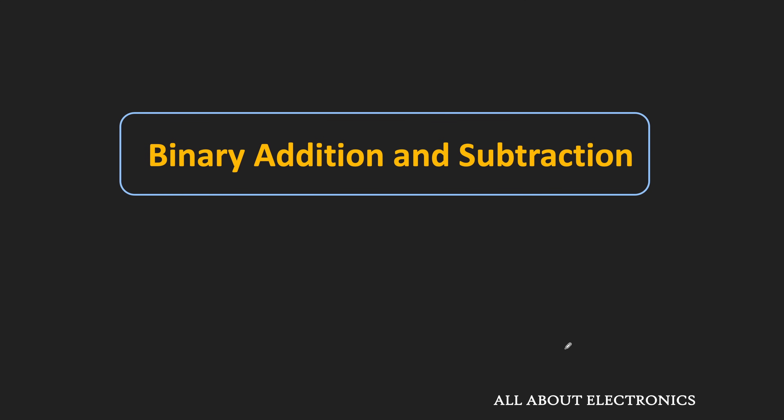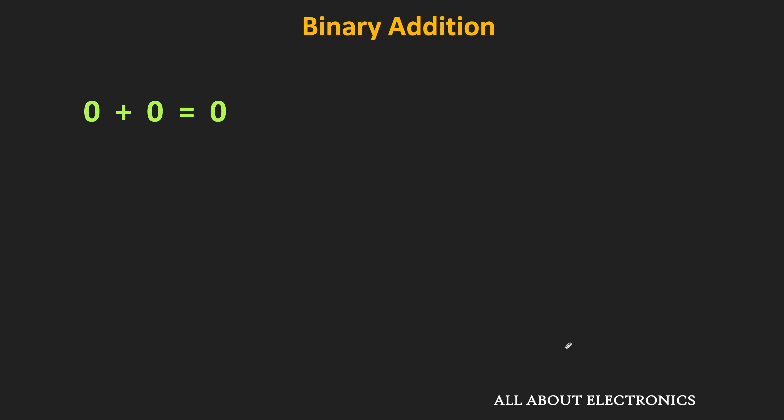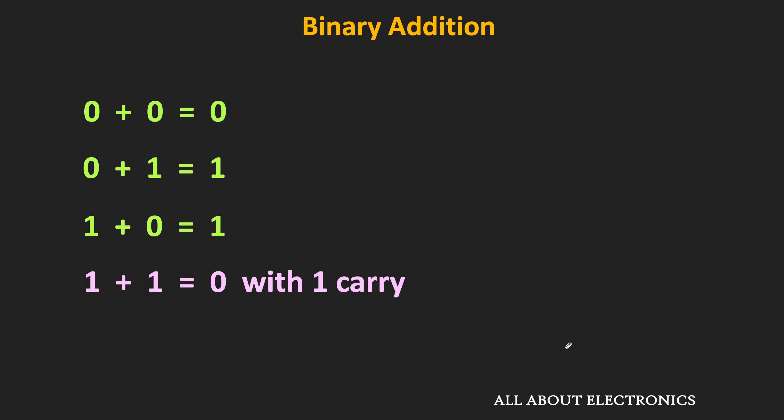First of all, let us understand how to perform binary addition. Following are the rules for binary addition. In binary, 0 plus 0 is equal to 0, similarly 0 plus 1 is equal to 1, while 1 plus 0 is equal to 1. And likewise, 1 plus 1 is equal to 0 with 1 as a carry to the next column.